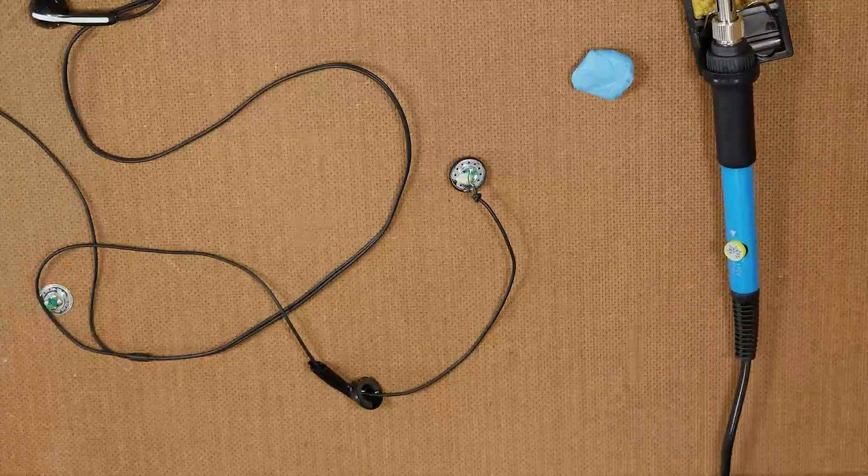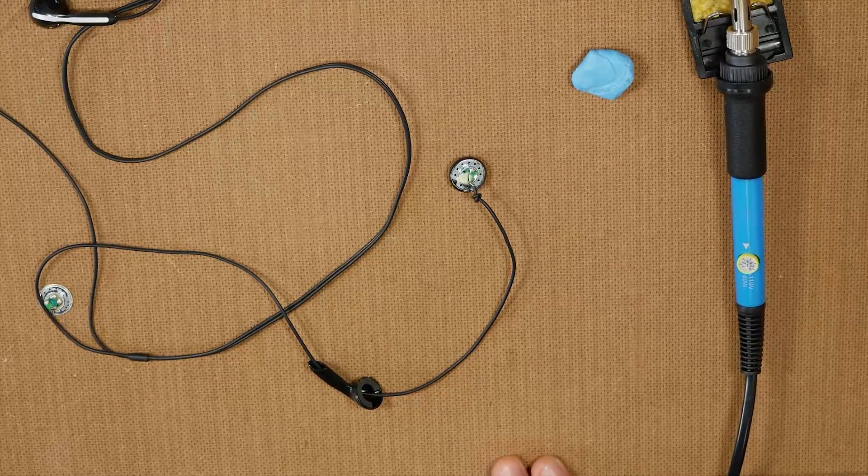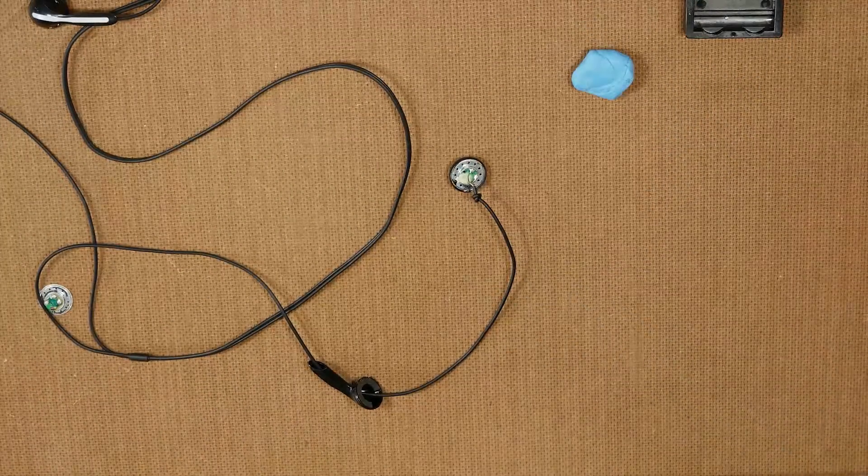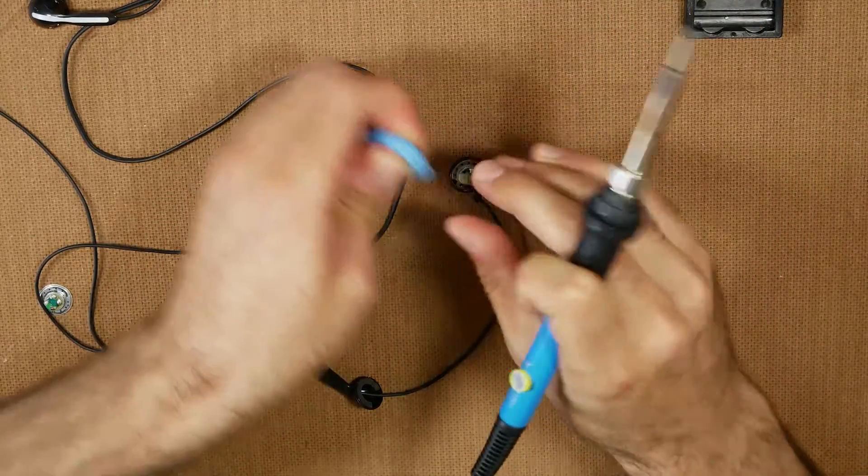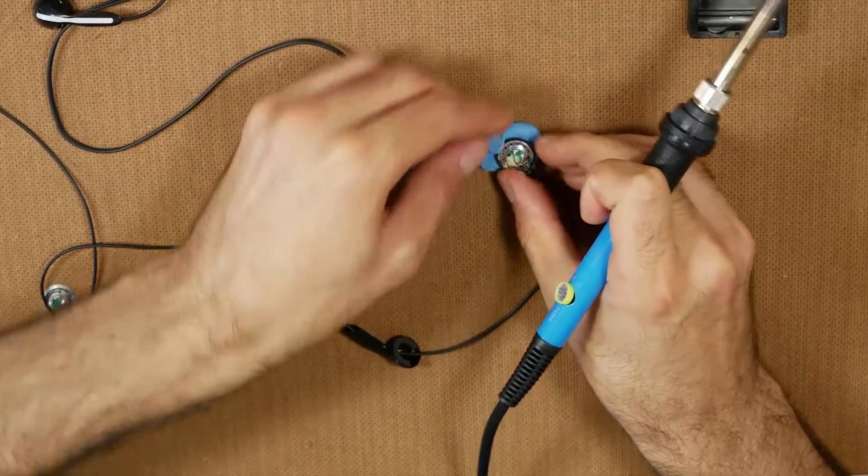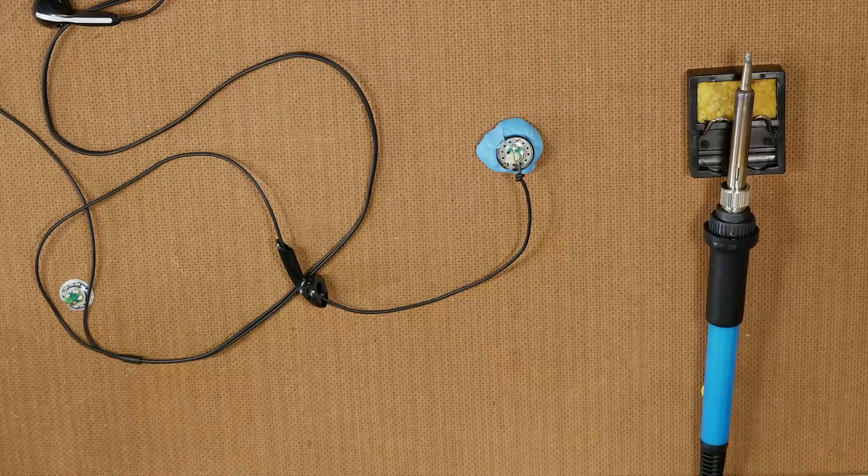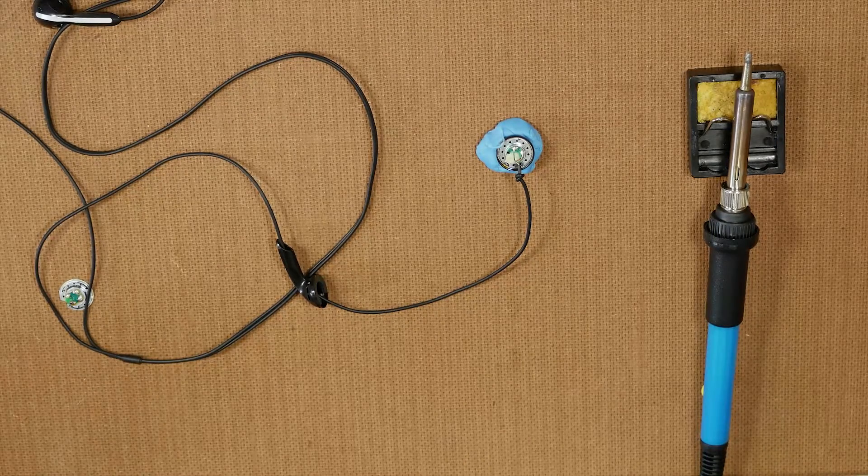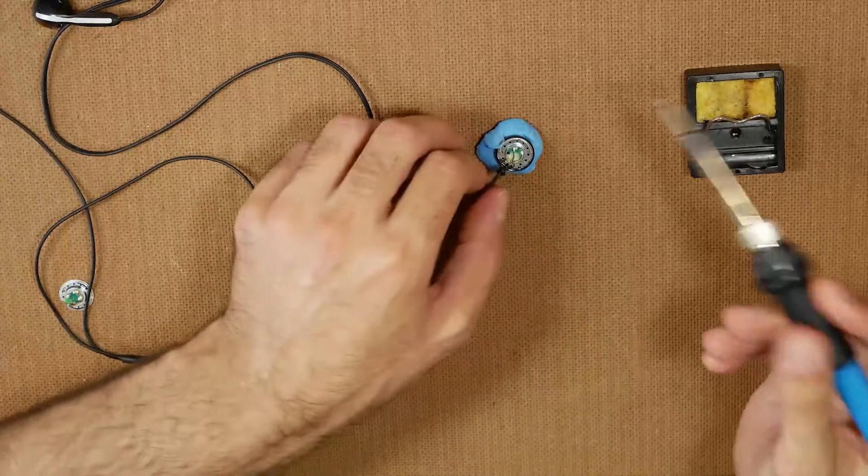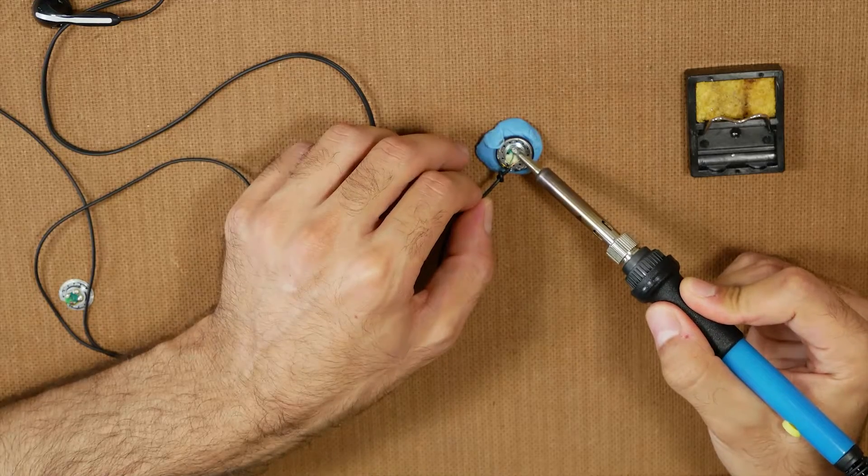The next step here was unsoldering the old cable on the Edifier H180s. And if you were wondering what that blue stuff is on my desk here, it's Blu-Tac, and this is what basically holds the earphone into place while I'm soldering. This part is relatively easy. You just let the solder heat up. Once that's heated, you put that onto the soldering joints, and that should melt the solder, which will allow you to remove the cable.